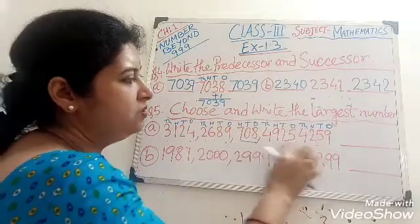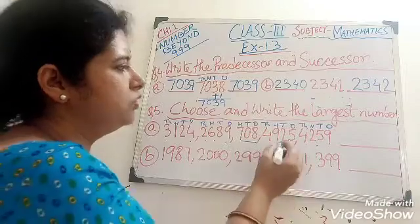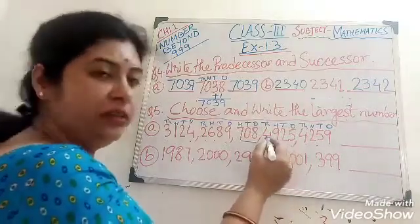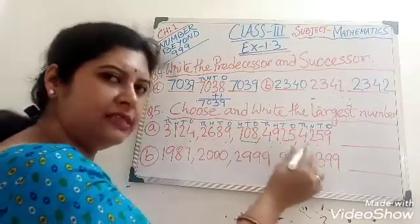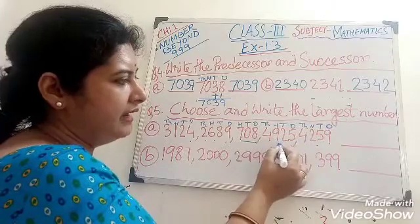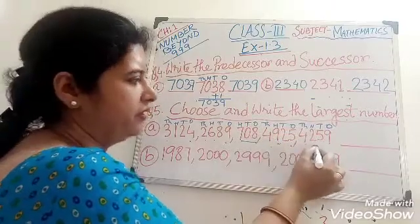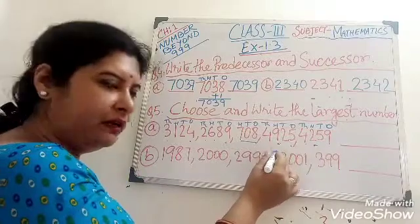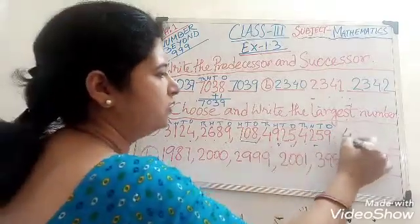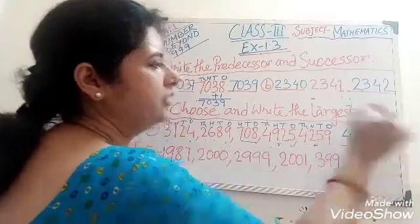Now here are two 4,000's numbers. So we check the thousand place — both numbers are same: 4,000. But in the hundred place, it is 900 and it is 200. So our bigger number is this one. So 4,925 is our larger number. Clear?